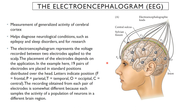Before we get into overall brain rhythms within the cortex, I want to discuss a very important technique used for looking at brain activity in humans. This is called the electroencephalogram, or EEG. It is used in clinical and research settings. In fact, one of the professors in the School of Neuroscience program, Sujith Vijayan, uses these with his subjects. This is how we measure generalized activity in the cerebral cortex.